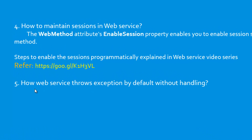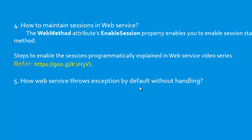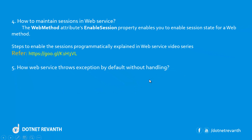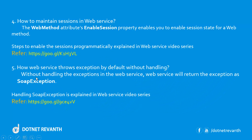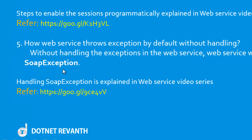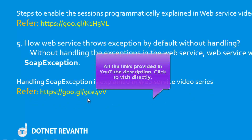Fifth question: how does a web service throw an exception by default without handling? Without handling the exception in a web service, the web service will return a SOAP exception. SOAP exception is explained in the web service video series. For reference, visit this link. All the links provided here are in the YouTube description — you can directly click on that.